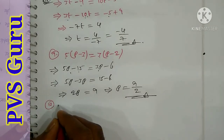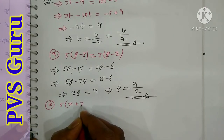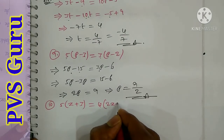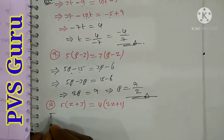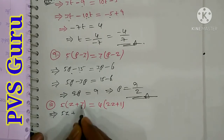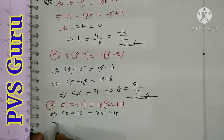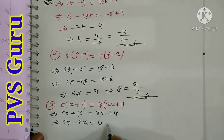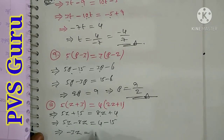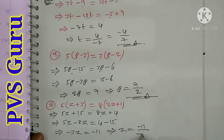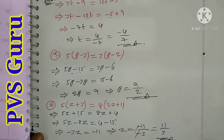Question number 10: 5 into (z plus 3) is equal to 4 into (2z plus 1). Expanding: 5z plus 15 equals 8z plus 4. Take 8z to the left side and 15 to the right side. 5z minus 8z is minus 3z, equal to 4 minus 15 equals minus 11. So z equals minus 11 by minus 3, which is 11 by 3.